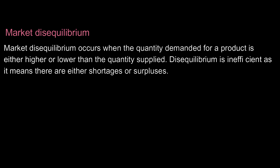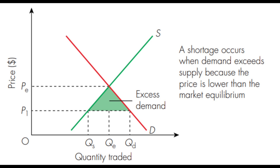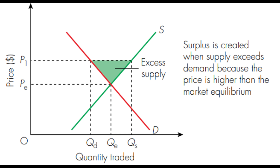Now let's look at market disequilibrium, which occurs when the quantity demanded for a product is either higher or lower than the quantity supplied. This is inefficient as it means there are either shortages or surpluses. A shortage occurs when there is excess demand, as shown in the diagram. A surplus is caused when there is an excess in supply, as also shown in the corresponding diagram.